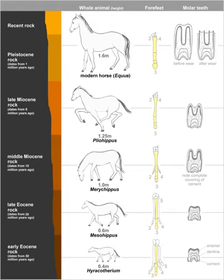Since then, as the number of Equid fossils has increased, the actual evolutionary progression from Eohippus to Equus has been discovered to be much more complex and multibranched than was initially supposed. The straight, direct progression from the former to the latter has been replaced by a more elaborate model with numerous branches in different directions, of which the modern horse is only one of many. George Gaylord Simpson in 1951 first recognized that the modern horse was not the goal of the entire lineage of Equids, but is simply the only genus of the many horse lineages to survive.